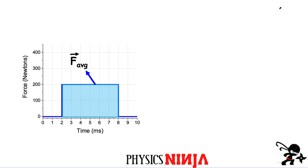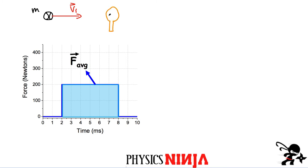First, a quick one-pager on what is impulse and the impulse momentum theorem. Consider this example where you have a ball striking a tennis racket. I have a tennis ball moving in one direction with some initial velocity. The tennis ball has a mass M, and then it strikes a racket — an old wooden racket.